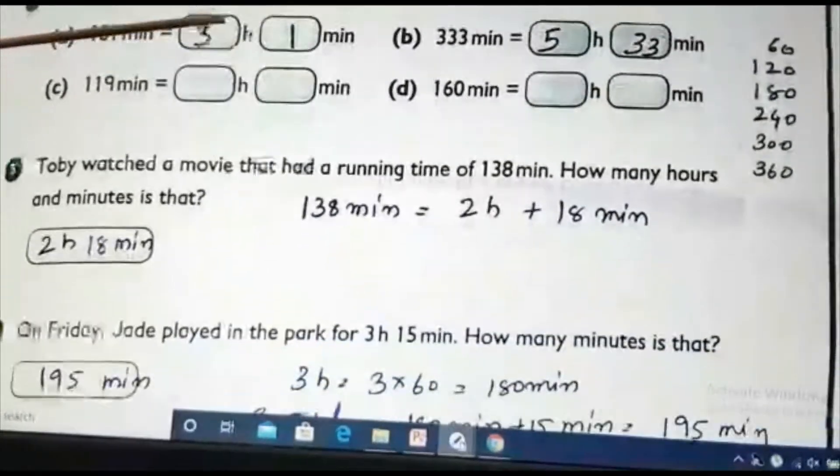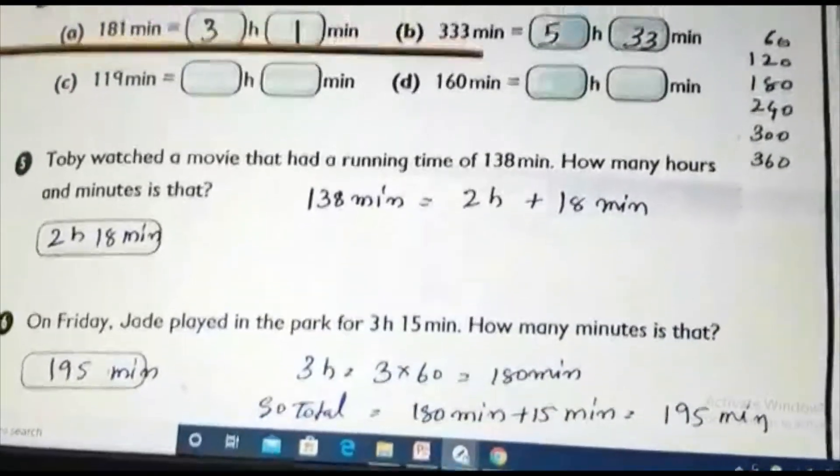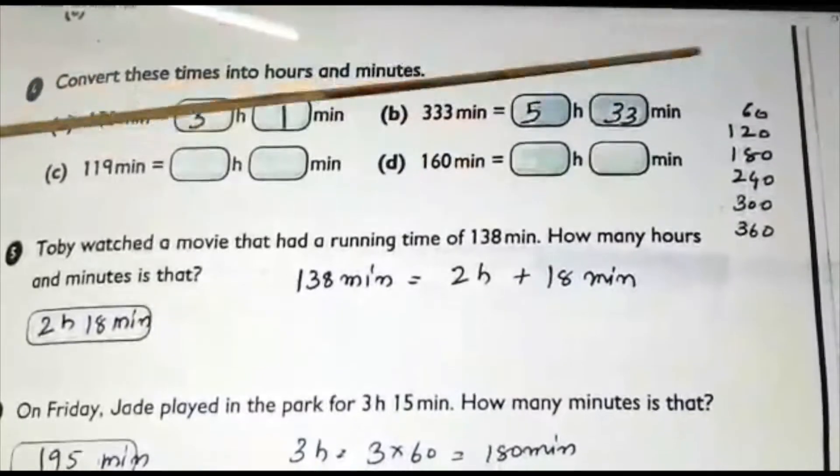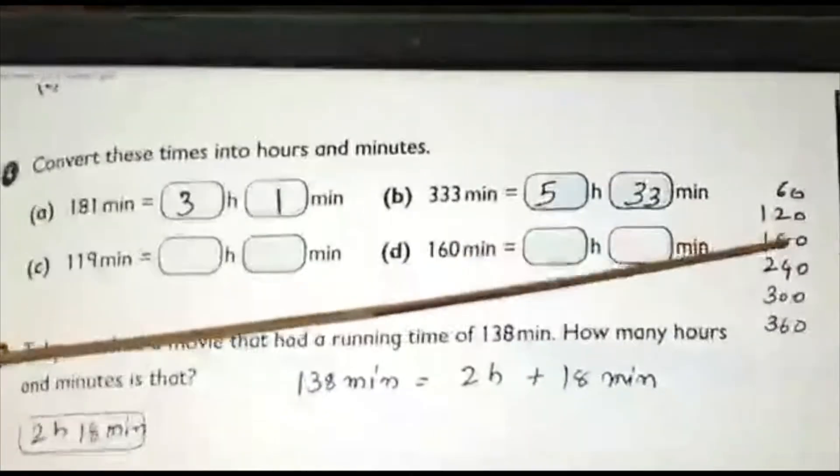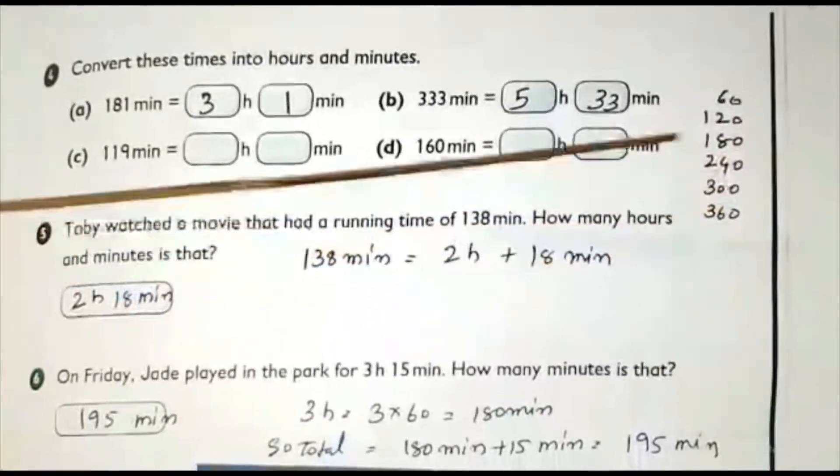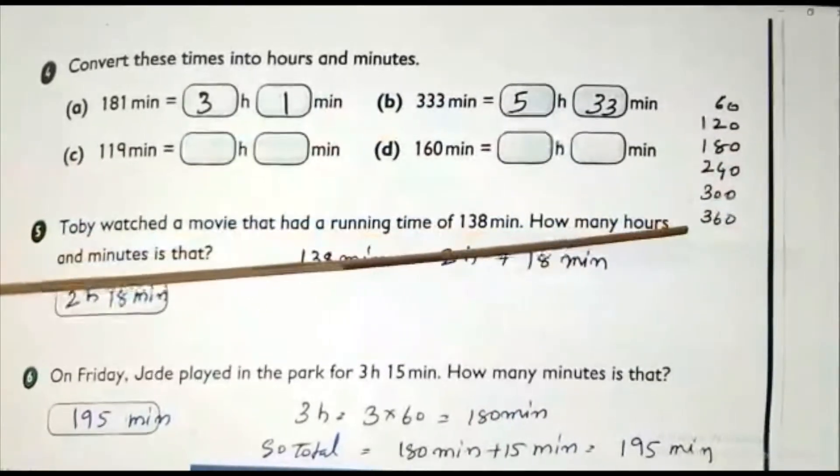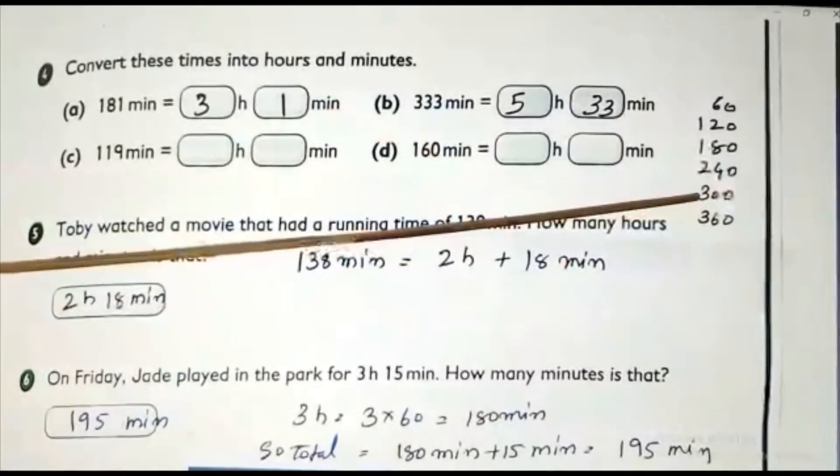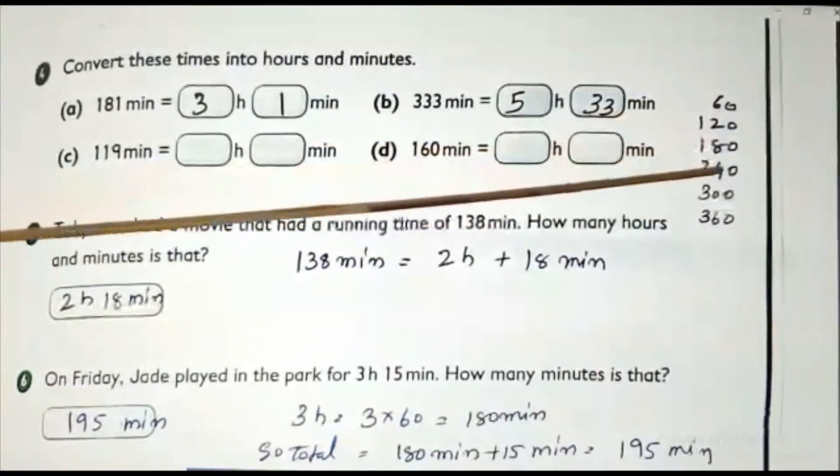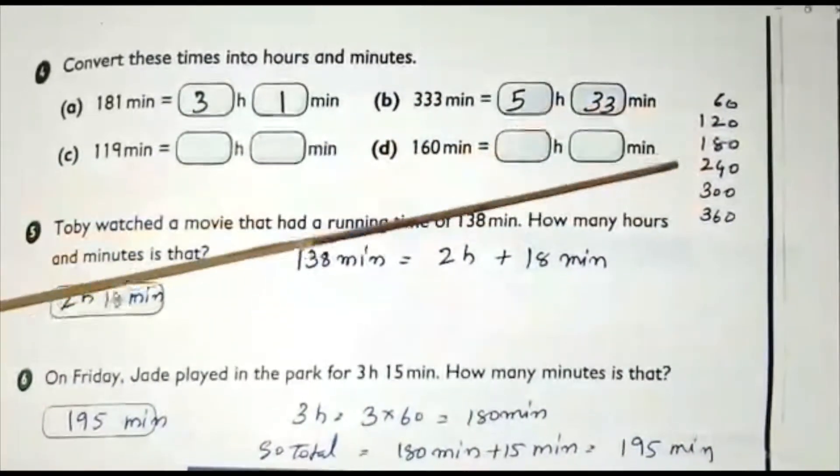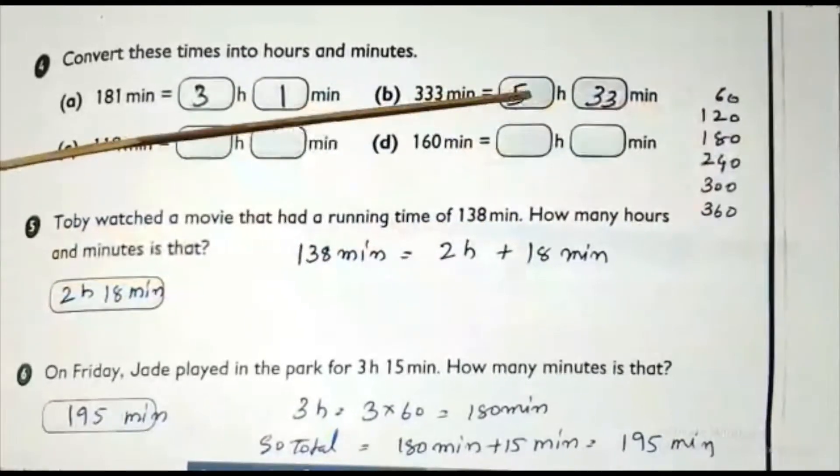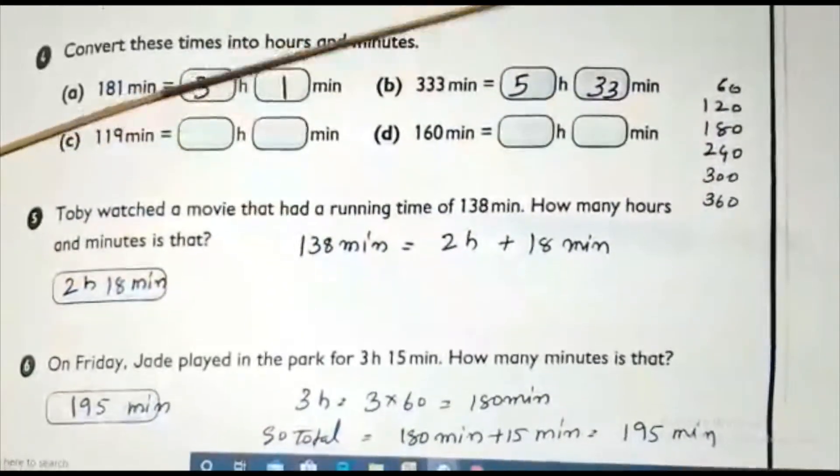Again, convert this into hours and minutes. See? 333 minutes. We know. I am writing the multiplication table for 60 here. 60, 120, 180, 240, 300, 360. What is our minute here? 333. So, where I will stop? I cannot go to 360. I will go back to 300. So, 1, 2, 3, 4, 5. 60 multiply 5 is 300. So, I know 5 hours, 33 minutes. Okay. Is it clear?